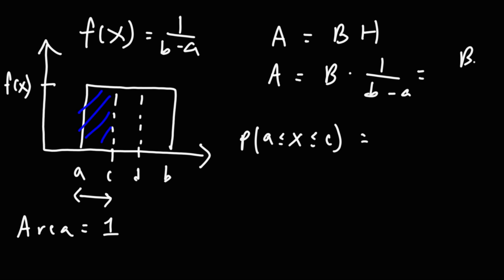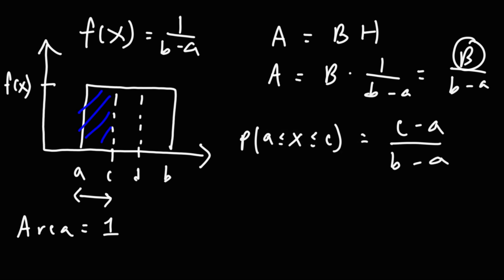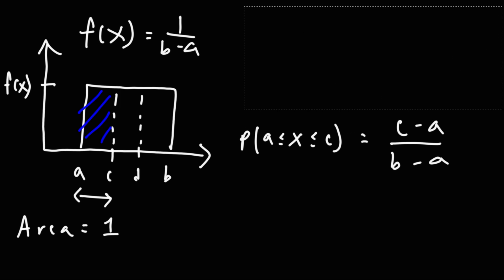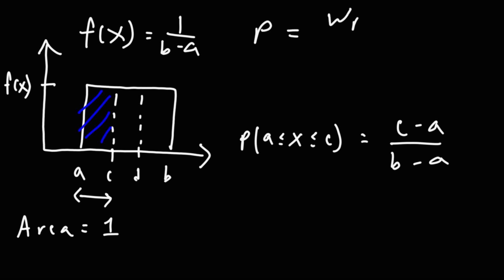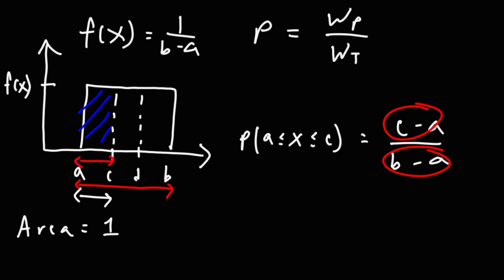You can write the probability as a ratio: the partial width divided by the total width. For example, the probability that x is between a and c is (c minus a) divided by (b minus a). The bottom part is always the total width b minus a. Think of it as comparing the partial width of the shaded area to the total width of the rectangle — that ratio gives you the probability of that region.